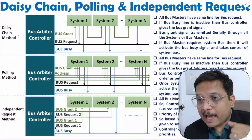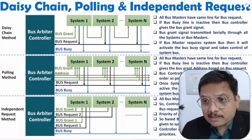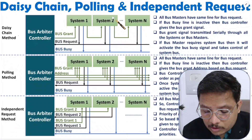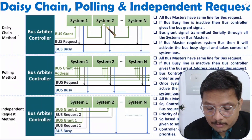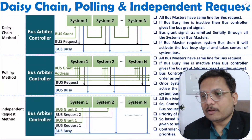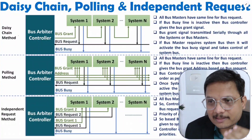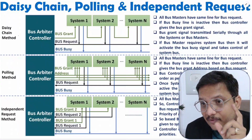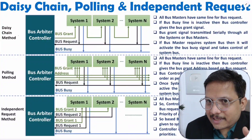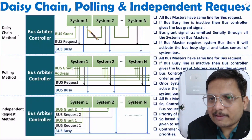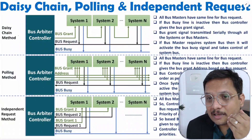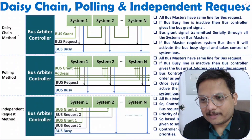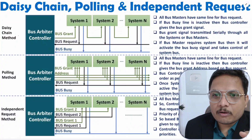There are a few disadvantages of daisy chain. If any system fails, then whatever systems come after it cannot have access to the system bus, because the failed system cannot forward the bus grant signal to the next system. Second disadvantage: even though system 1 is not interested, the first priority will always be given to system 1, because bus grant is first sent to system 1. If system 1 is not interested, then it is given to system 2. So even if priorities don't actually belong to system 1, it always gets first consideration. That is the second disadvantage.